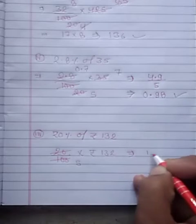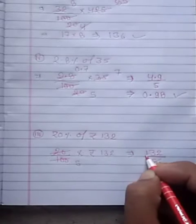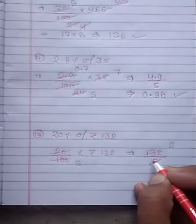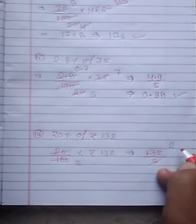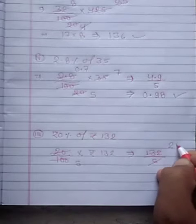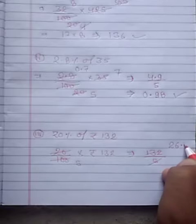Clear? And here 132 divided 5. 5, 2, 10. Carry 3, 3, 2, 32. 5, 6, 30. 2 carry. 5, 4, 20.